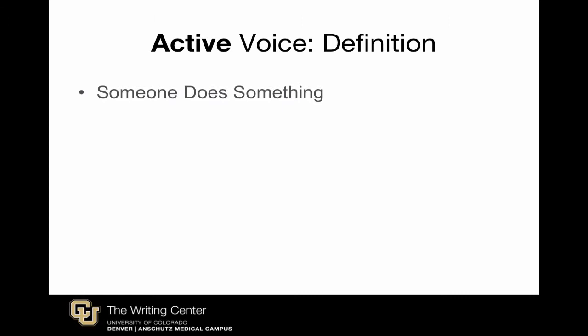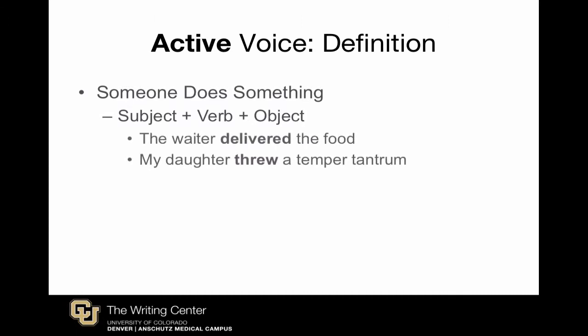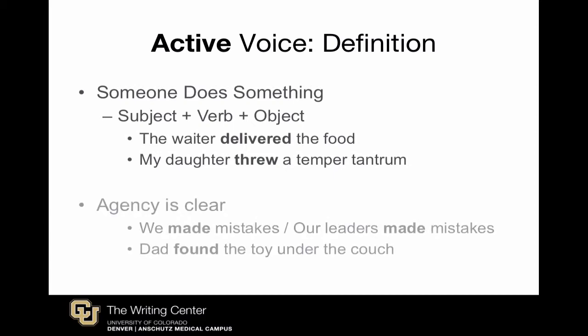In contrast, the active voice happens when someone does something. It's formed by a subject, plus a verb, and sometimes an object, as in these examples: 'The waiter delivered the food,' and 'My daughter threw a temper tantrum.'